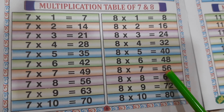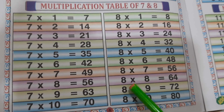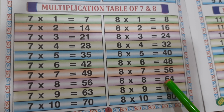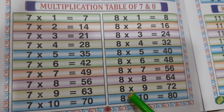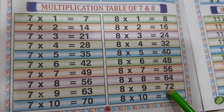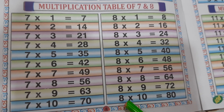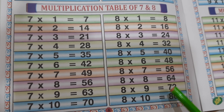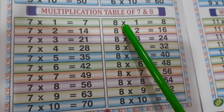8 7's are 56. 8 8's are 64. 8 9's are 72. 8 10's are 80.